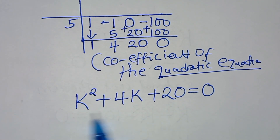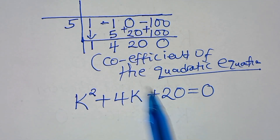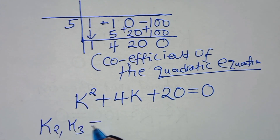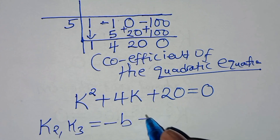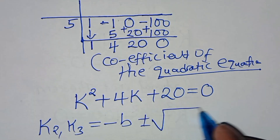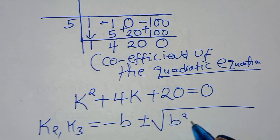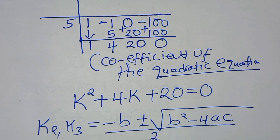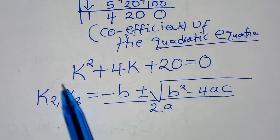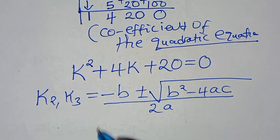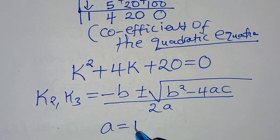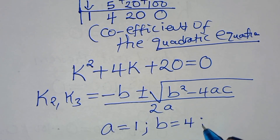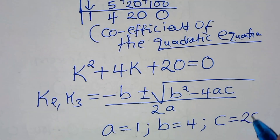We have reduced the cubic to the quadratic equation k² + 4k + 20 = 0. Applying the quadratic formula: k equals negative b plus or minus the square root of b² minus 4ac, all divided by 2a. Here a equals 1, b equals 4, and c equals 20.